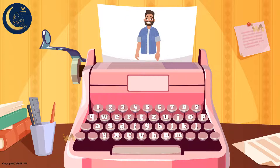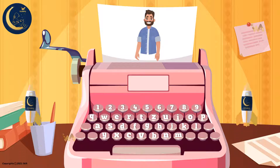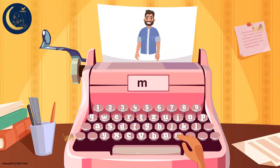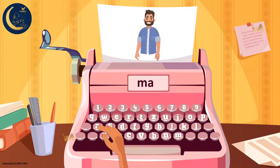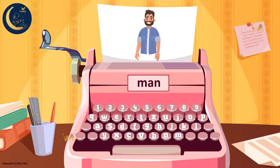Here we have another one. This is a man. Listen to the word again: man. The word man starts with the m sound, and it has the ah sound. The last sound is the n sound. The word man has three letters: m, a, and n.